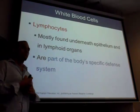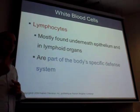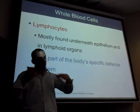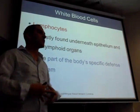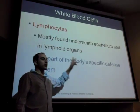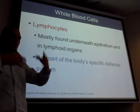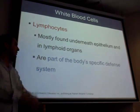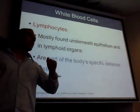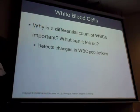T cells and B cells are the adaptive/specific lymphocytes. Natural killer cells are innate, not adaptive. The specific defense involves only B cells and T cells. Natural killers are innate — we'll explain that better later.